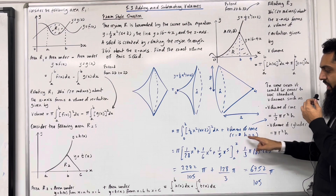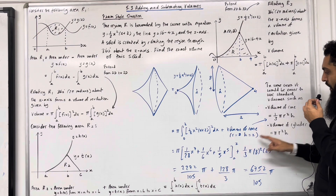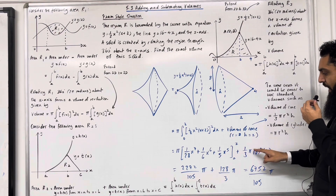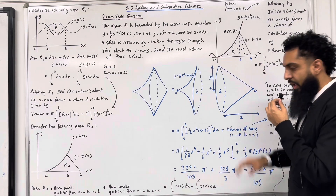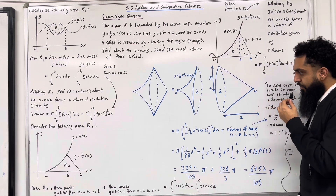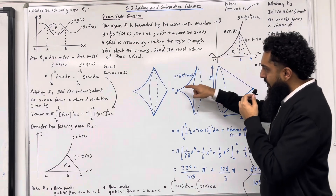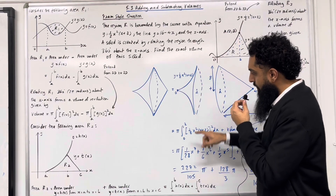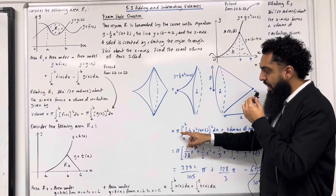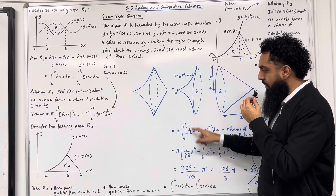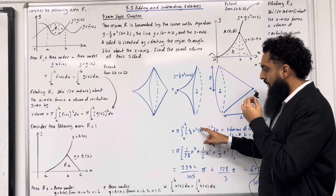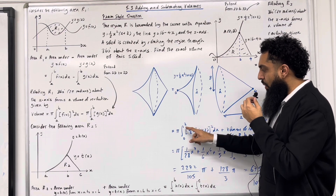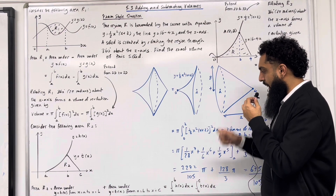We can quickly calculate the volume of this cone using volume = ⅓πr²h. Substituting r = 8 and h = 2 gives ⅓π × 64 × 2. To calculate the volume of the first solid of revolution, I do π multiplied by the integral from 0 to 2 of [½x²(x + 2)]², squared, dx.